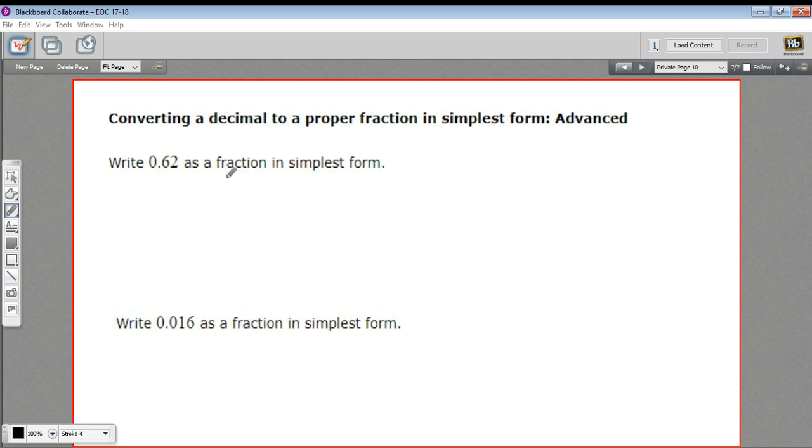To turn a decimal into a fraction, we figure out the place of the last number. So after the decimal point, it goes tenths, then hundredths. So the last place here is hundredths. That is going to be our denominator, 100.